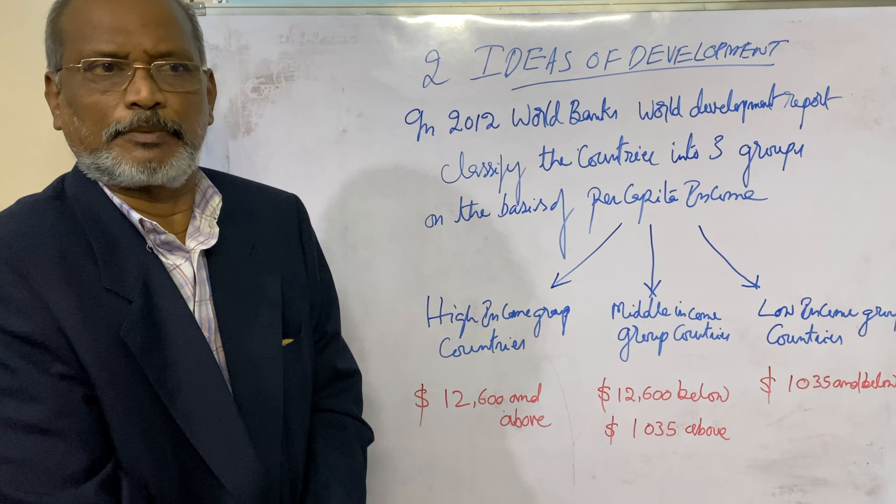Per capita income is also called average income. This per capita income is useful only for comparison purposes, and per capita income or average income hides disparity. Thank you for watching this video.